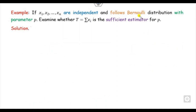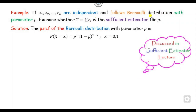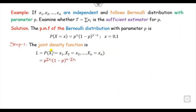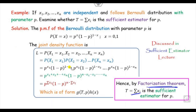Now consider a second example with a Bernoulli distribution. You have to find the sufficient estimator and check whether it exists. We know the PMF of the Bernoulli distribution. If you recall the last lecture, we already solved this example using the factorization theorem and found the sufficient estimator. Now let's solve it using the Fisher-Newman criteria.